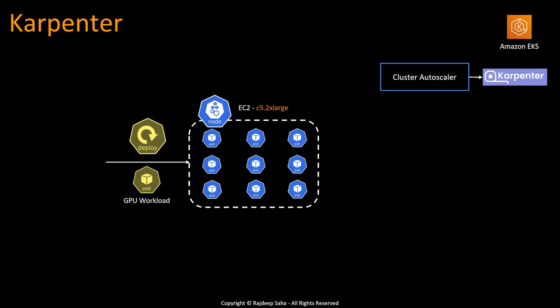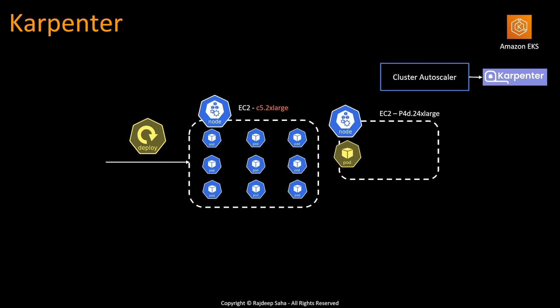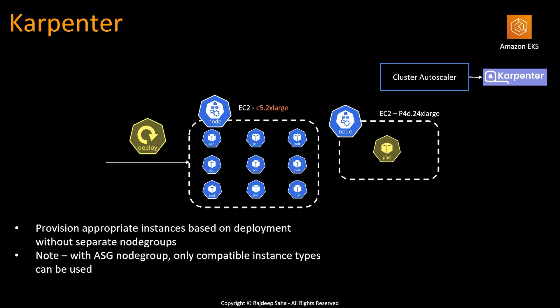Now let's take a look at the same scenario but this time with Karpenter. Another deployment file gets deployed and we want to schedule a GPU pod. Karpenter will spin up the GPU EC2 accordingly and schedule the pod. So Karpenter provisions appropriate instances based on the deployment, without the need of creating separate node groups.